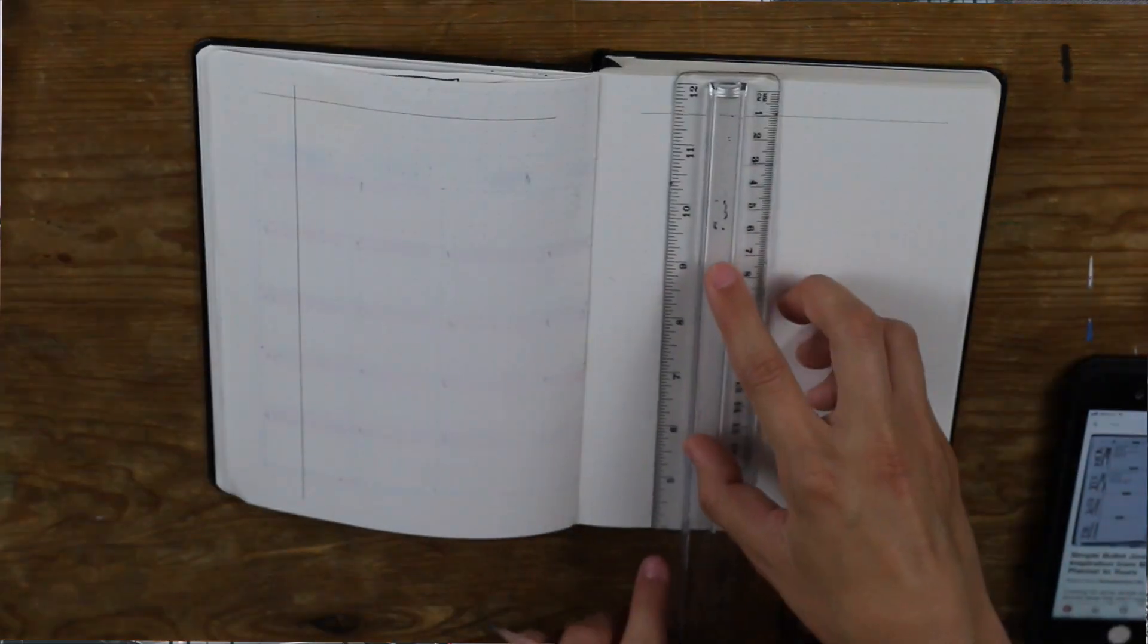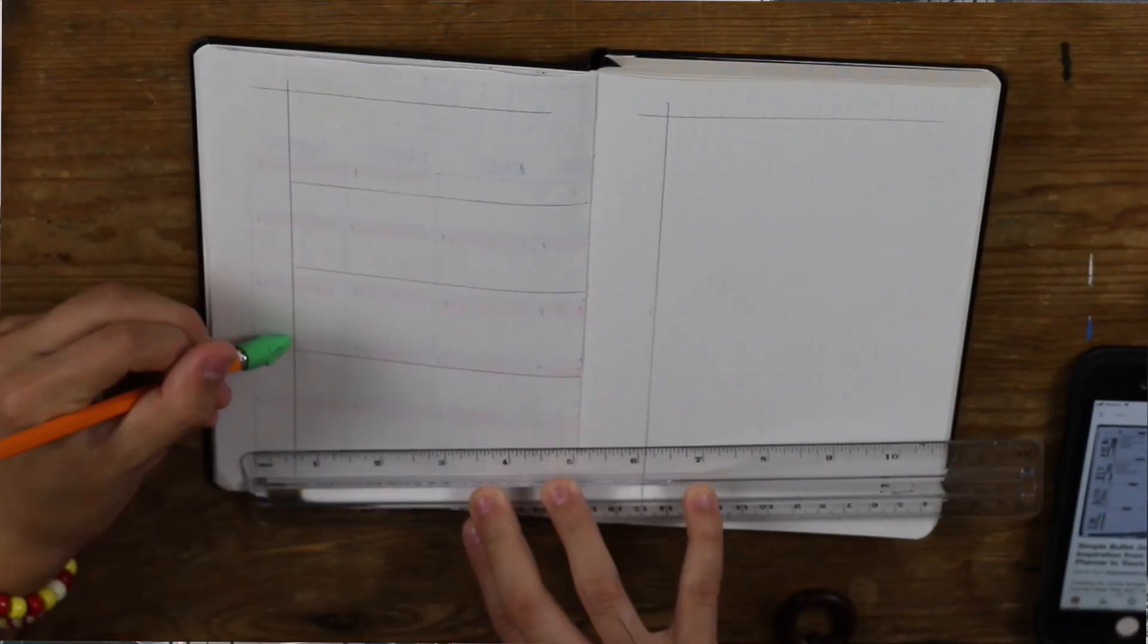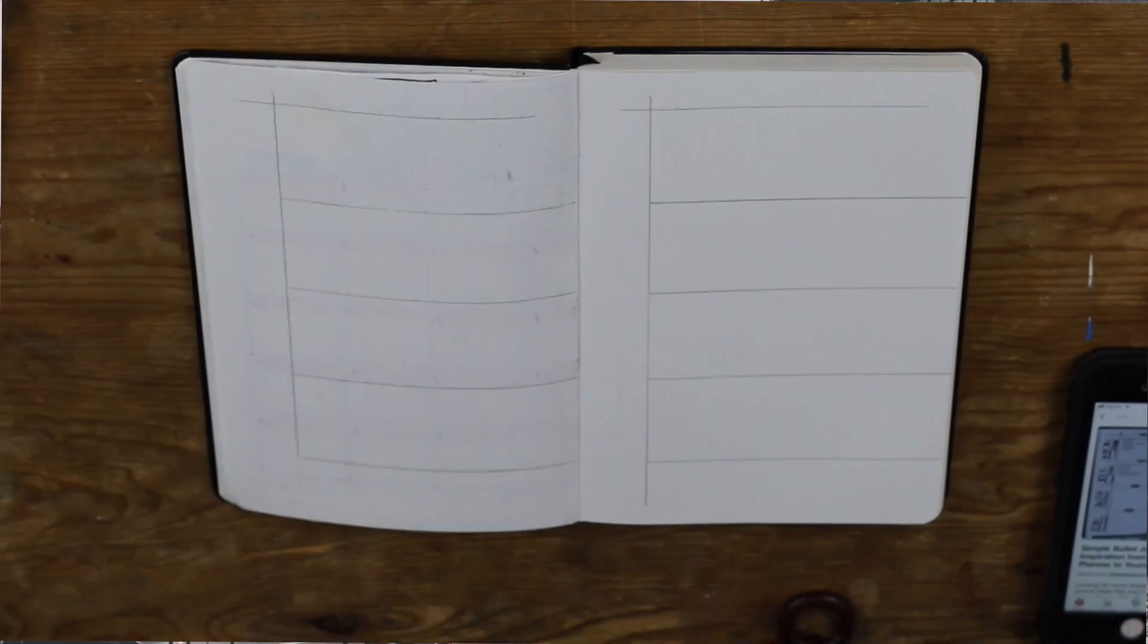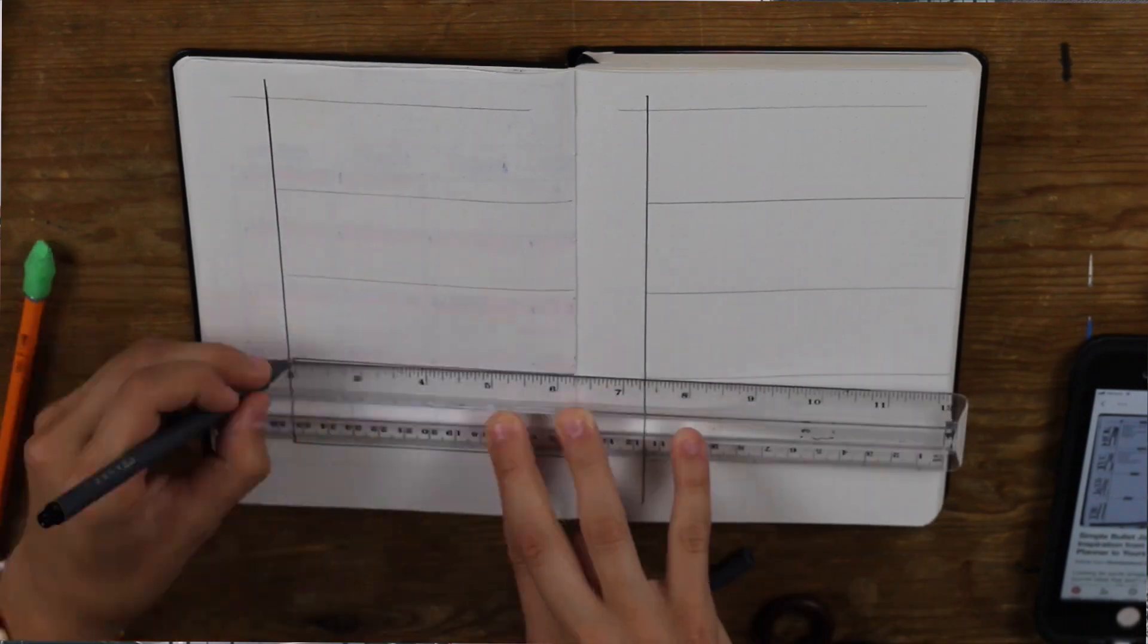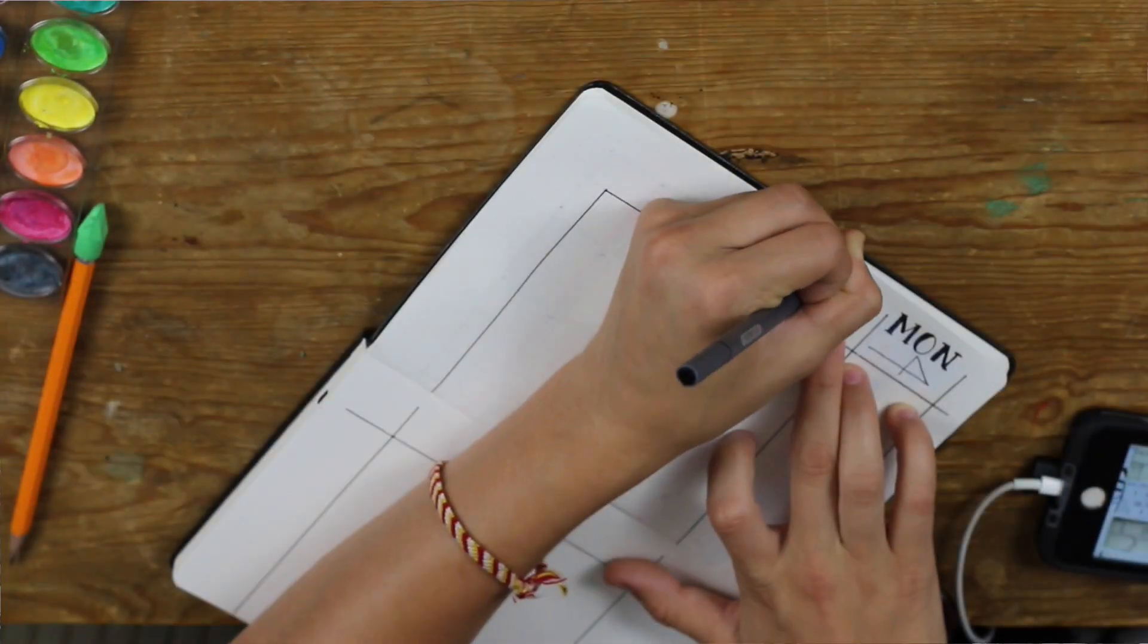This is my first time doing a weekly spread and it makes sense that it's for summer because I have a lot more going on in the summer, like more trips and stuff to keep track of. Basically I used a ruler and did a bunch of lines to try to measure it out. It didn't really go very well.